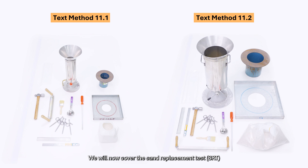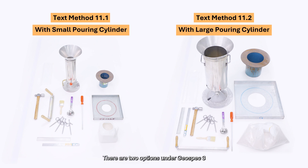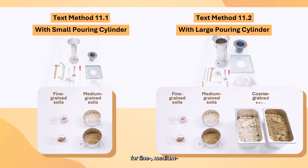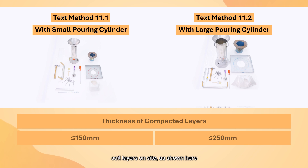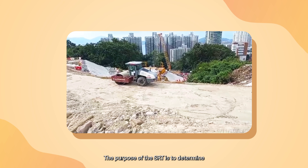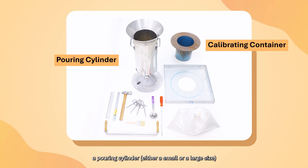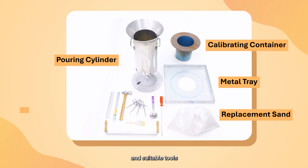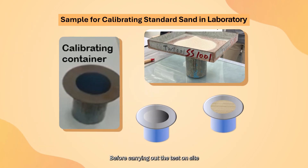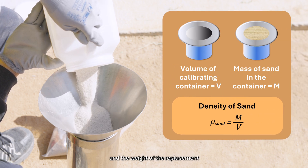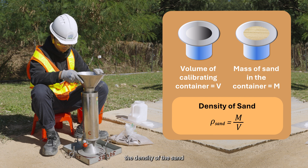We will now cover the Sand Replacement Test. There are two options under GeoSpec 3: the small pouring cylinder, suitable for fine to medium grain soils, and the large pouring cylinder, suitable for fine, medium, and coarse grain soils. The option to be used also depends on the thickness of the compacted soil layers on site. The purpose of the SRT is to determine the in-situ dry density of the soil. The apparatus includes a pouring cylinder, a metal tray with a hole, replacement sand, and suitable tools for excavating holes in the soil. Before carrying out the test on site, the density of the replacement sand should be determined in the laboratory using a calibrating container, by measuring its volume and the weight of sand within it.